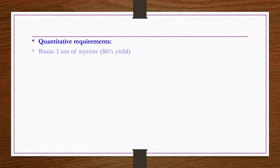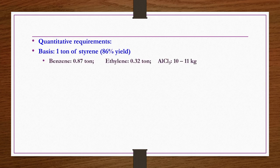The ethylbenzene then undergoes dehydrogenation in the presence of tin oxide or iron oxide catalyst at 815°C to produce styrene, which is an endothermic reaction. Quantitative requirements to produce 1 ton of styrene at 86% yield: benzene 0.87 tons, ethylene 0.32 tons, aluminum chloride 10–11 kg. Plant capacity is 30 to 400 tons per day.